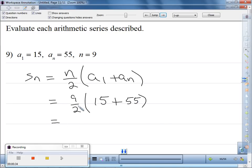All right, so 9 divided by 2 is going to give us 4.5, 15 plus 55, and then we multiply those two together, and we end up with 315.